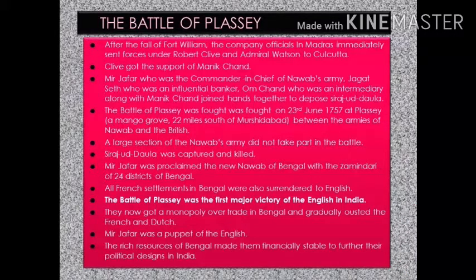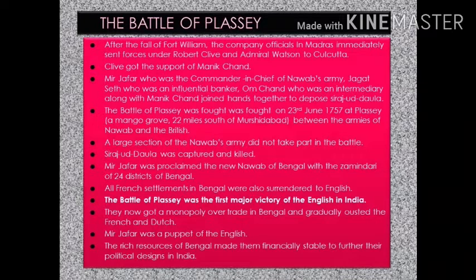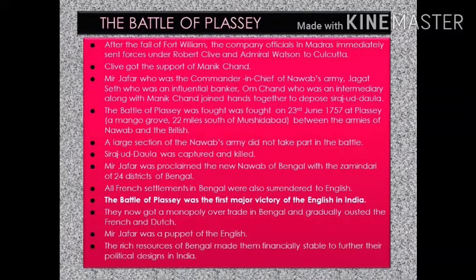The Battle of Plassey actually started with the fall of Fort William. Fort William was fortified by the English, and when Siraj ud-Daula came to know this, he stopped the fortification. He also captured the company's officials, disarmed the English soldiers, and blockaded the English ships. He gave charge of Kolkata to Manik Chand and returned to Murshidabad.